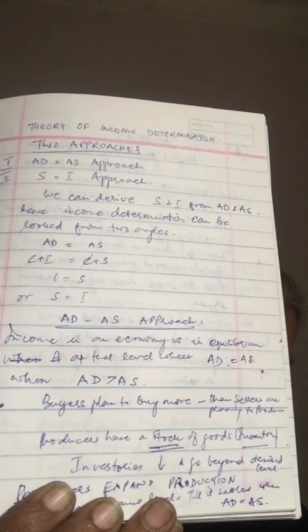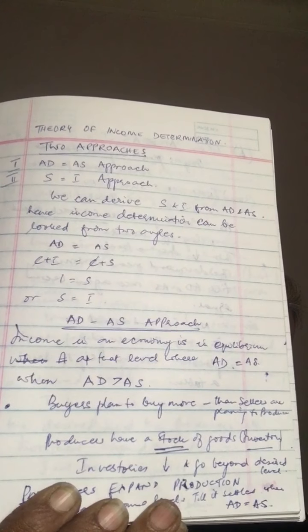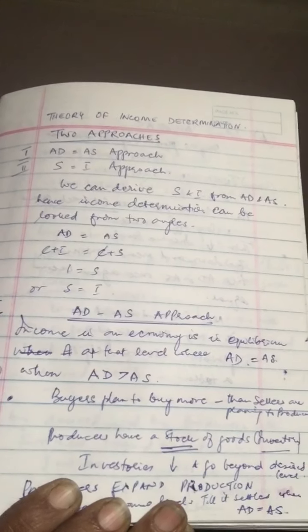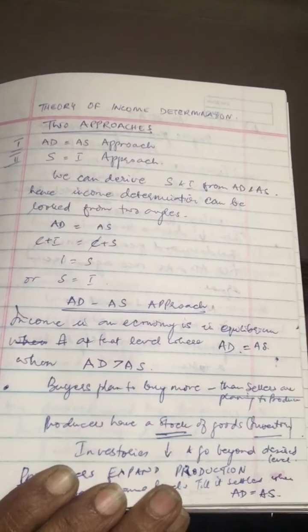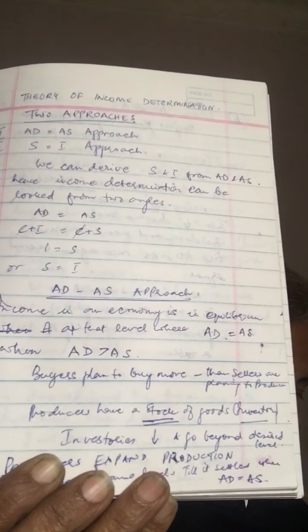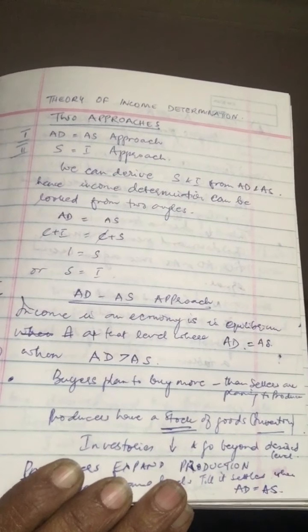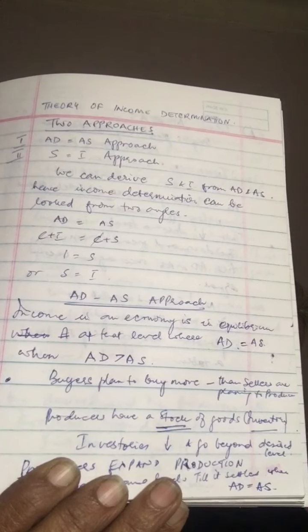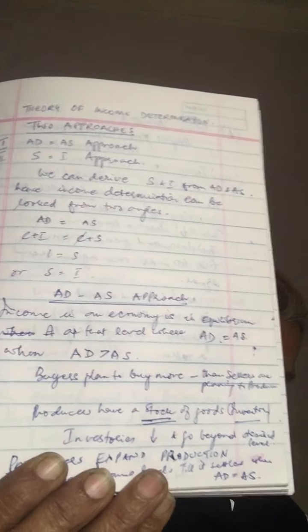and since national income is used either for making consumption expenditure or for saving, it is expressed as consumption plus saving, C plus S. So if we take AD is equal to AS, then it's going to be C plus I is equal to C plus S. Cancel out the C's algebraically and I is equal to S or S is equal to I.